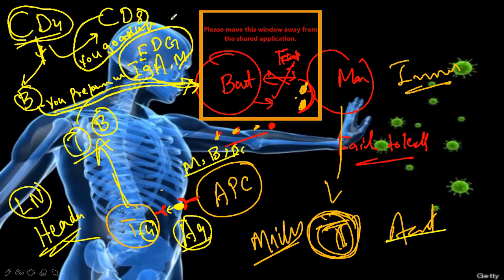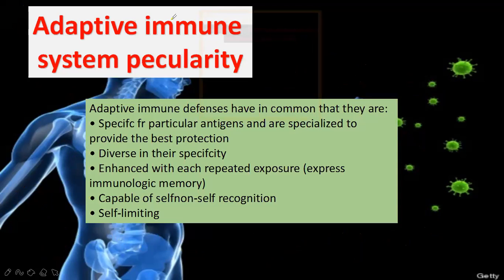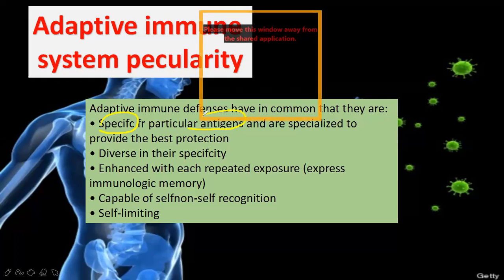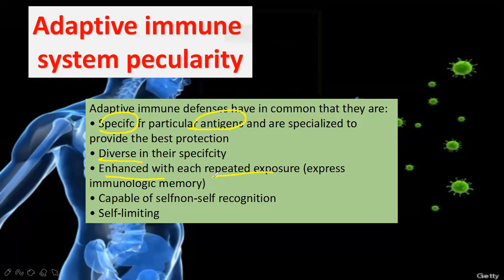Understand how our innate immunity gives message to adaptive immunity for help. Adaptive immunity is very specific — it recognizes special antigens. The response is enhanced when the enemy comes again. If the same virus enters your body again and again, your immunity becomes stronger each time.